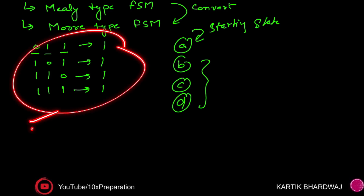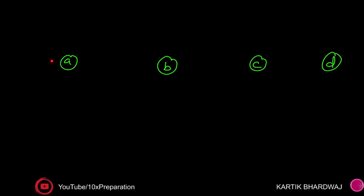We have to check all four combinations. If zero is the input, it is going to be retained at the same position — zero input, zero output. Always remember: when talking about the FSM in Mealy notation, the format is input/output. So zero by zero means the first number is your input and the second is your output.